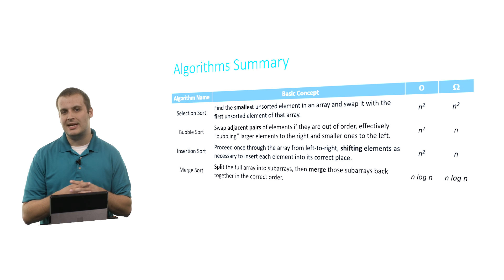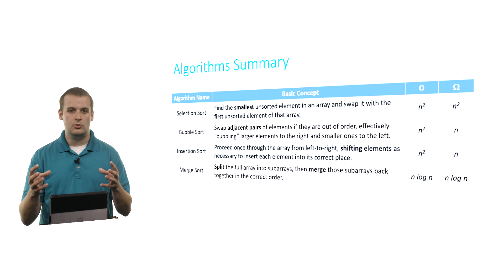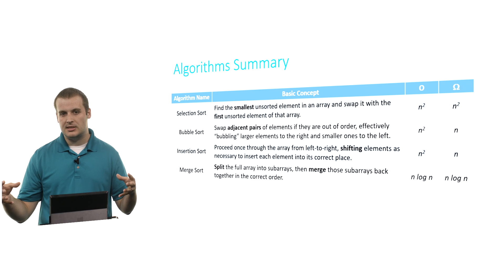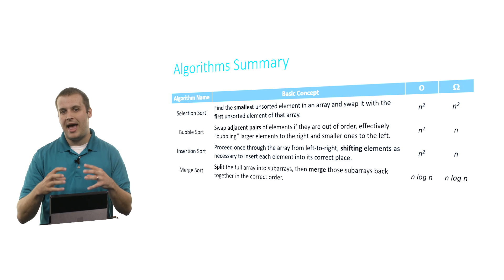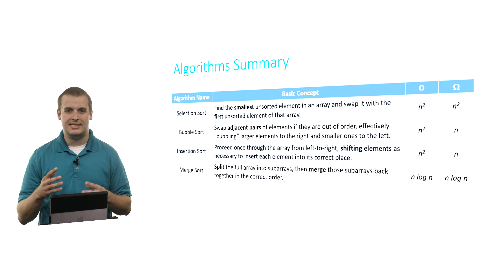Then we begin to merge those subarrays back together in the correct order. So we take two one element arrays and create a two element array. We take two two element arrays and create a four element array. And so on and so on, until we've again rebuilt one n element array. The worst case runtime of merge sort is n times log n. We have n elements, but this recombining process takes log n steps to get back to a full array. The best case runtime is also n log n, because this process doesn't really care whether the array was sorted or not to start with. The process is the same. There's no way to short circuit things. So n log n in the worst case, n log n in the best case.